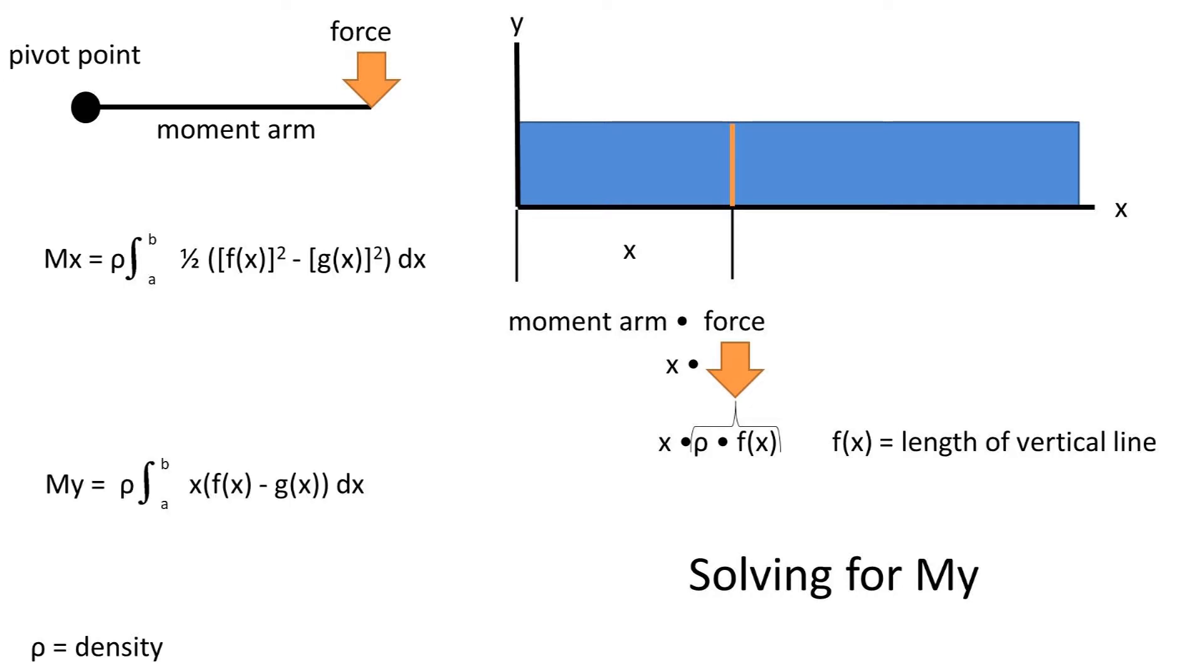The formula for the moment about the y-axis for a given area is the density times the integral from b to a of x times f(x) minus g(x) with respect to x.